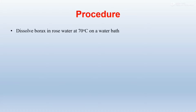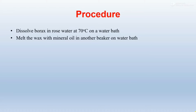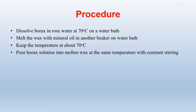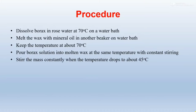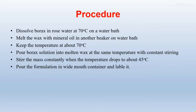Procedure: dissolve borax in rose water at 70°C on a water bath. Then melt the wax with mineral oil in another beaker on a water bath, keeping temperature at about 70°C. Pour the borax solution into the molten wax at the same temperature with constant stirring. Stir the mixture constantly until the temperature drops to about 45°C, then pour the formulation into a wide mouth container and label it.